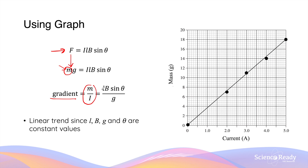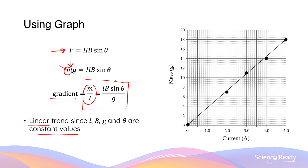The gradient is equal to L times B times sinθ divided by g. Normally, if the experiment is conducted with the correct control variables, the relationship between mass and the current should be a directly proportional one, which means you will always observe a linear relationship. This is because the four variables — length, the magnetic field strength, the acceleration due to gravity, and the angle between the conductor and the magnetic field — are constant values. We can also use this expression to calculate any of the four variables by using the gradient shown by the graph.